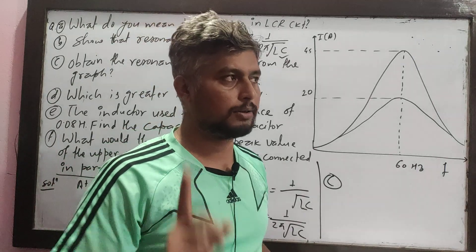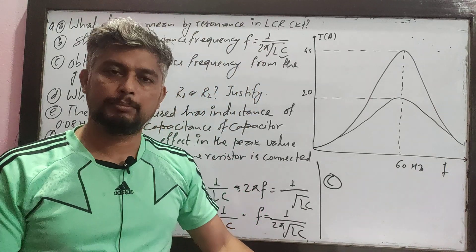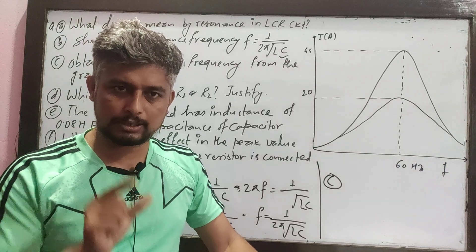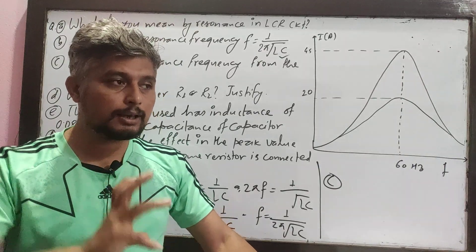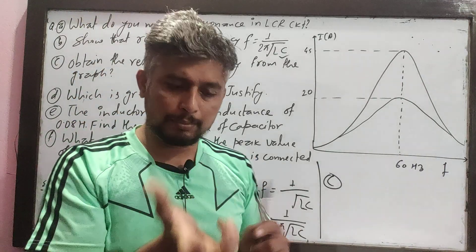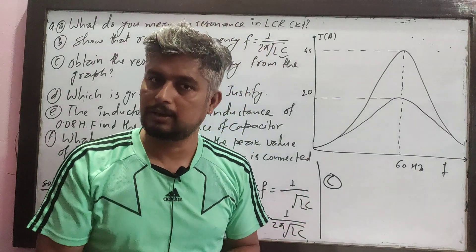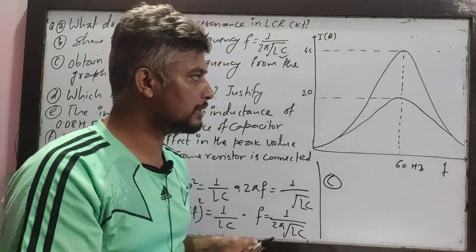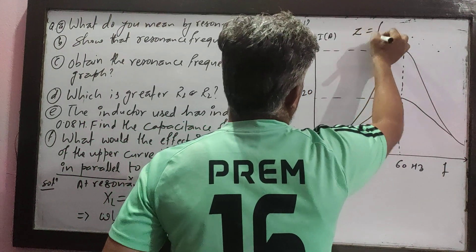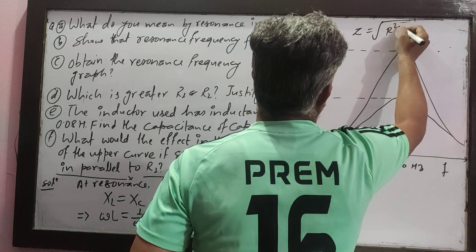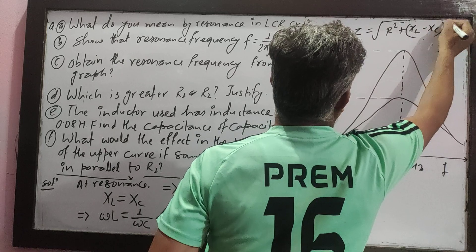According to the definition, what is resonance? XL equals XC, so Z is minimum. Impedance is the opposition offered by a circuit to the flow of AC, provided by the resistor, capacitor, and inductor combined. Z equals root over R squared plus (XL minus XC) whole squared.